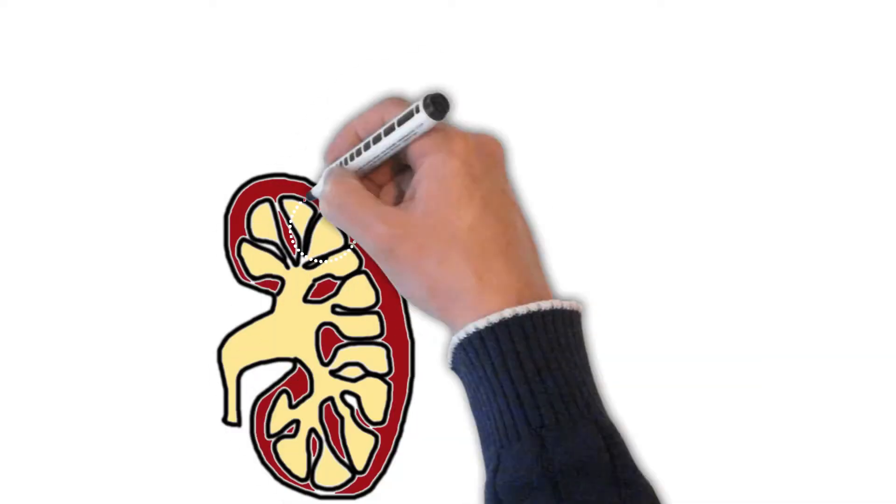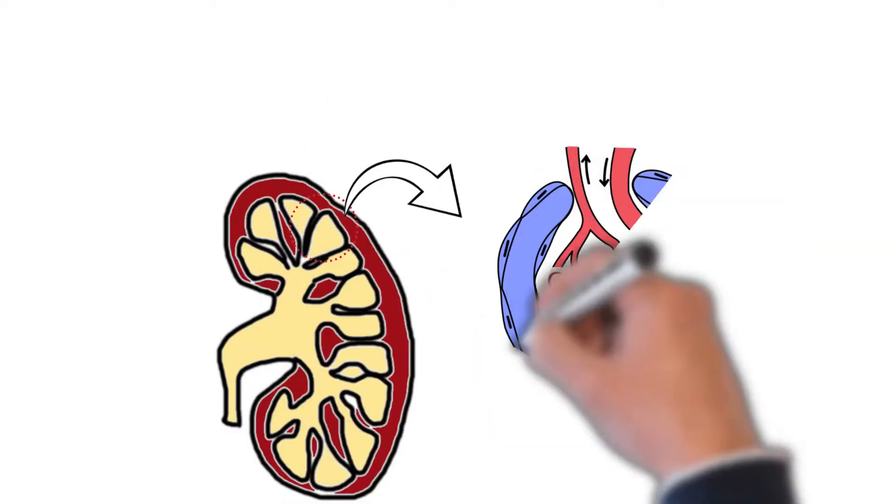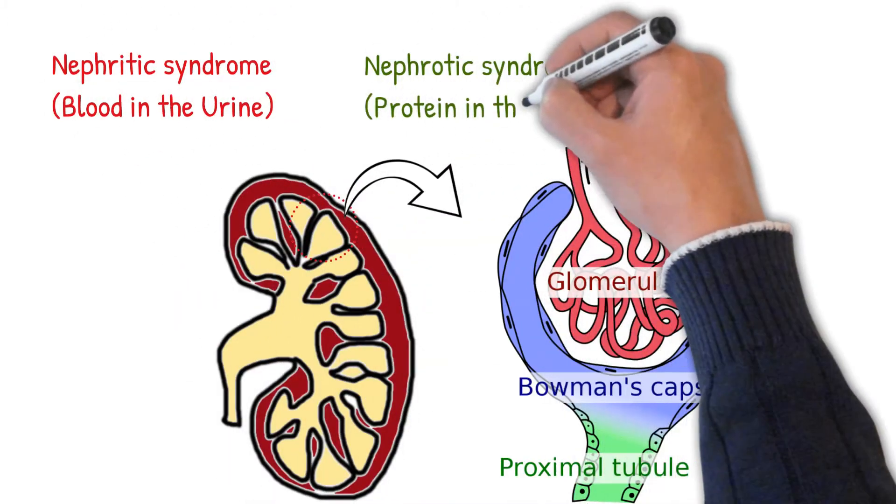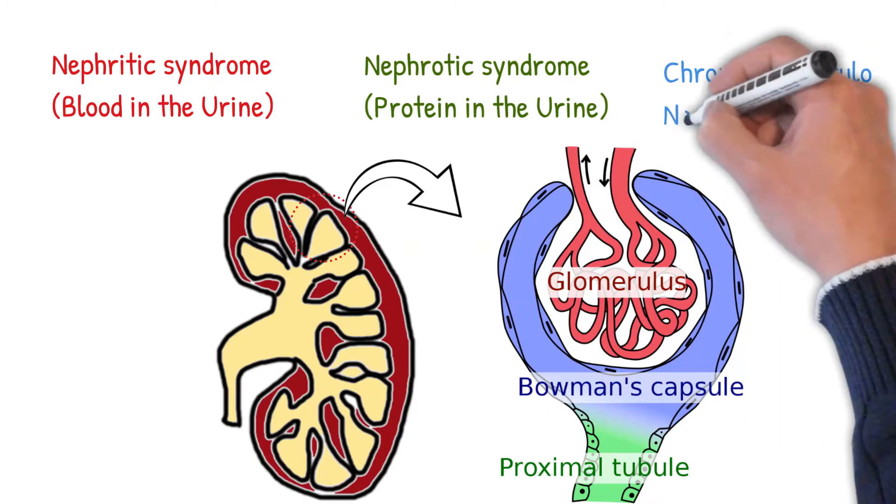There are three clinical manifestations of glomerular diseases: 1. Nephritic syndrome, 2. Nephrotic syndrome, 3. Chronic glomerulonephritis.